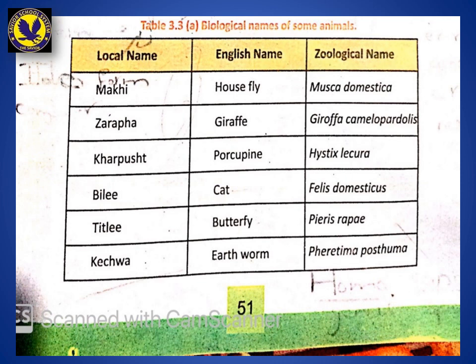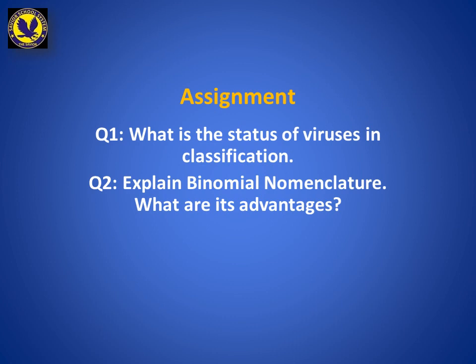There is a table on page 51 showing local name, English name, and zoological name. For example: house fly — Musca domestica; giraffe — Giraffa camelopardalis; mosquito — Culex fatigans; cat — Felis domesticus; butterfly — Pieris rapae; and earthworm — Pheretima posthuma. These are your common, English, and zoological names.